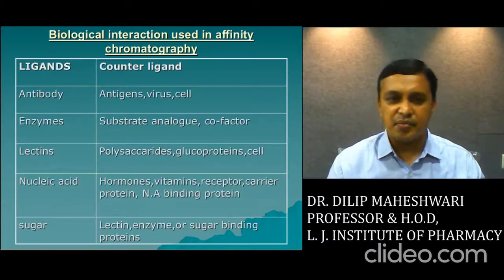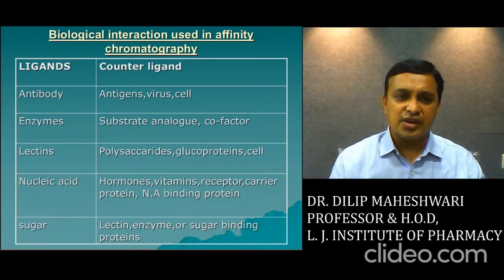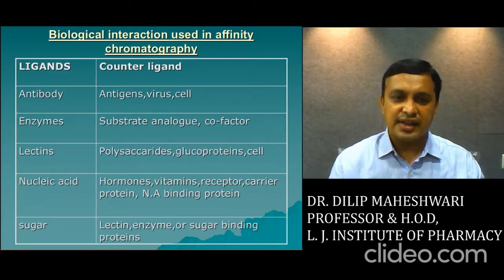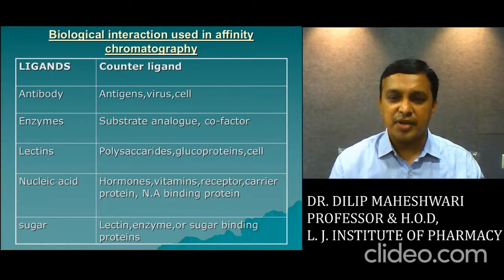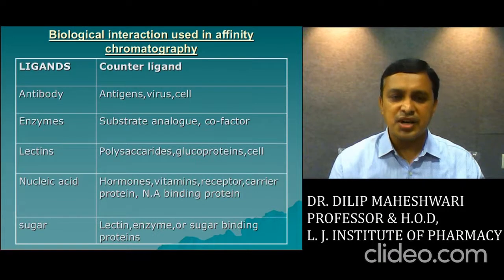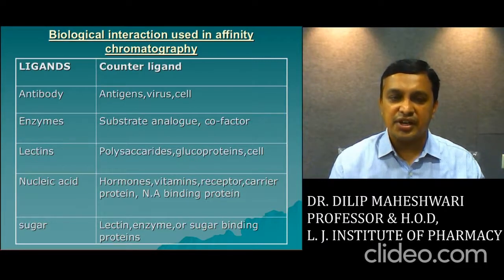These are some examples of ligands and counter-ligands used in affinity chromatography. When antibody is used as the ligand, antigen, virus, and cells can be separated. Enzyme substrates, analogs, or cofactors are used. Lectins allow separation of polysaccharides or glycoprotein cells. Nucleic acids, hormones, vitamins, receptors, carrier proteins, and non-antibody binding proteins are separated out. Sugars, lectin enzymes, or sugar-binding proteins are also examples of ligands and counter-ligands used for the separation of biological substances.